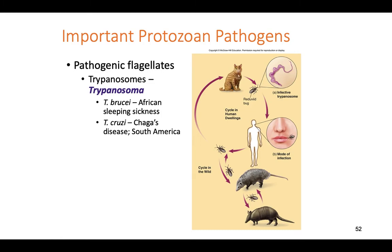One important one you might be familiar with is Trypanosoma — a flagellated protozoan capable of swimming. Trypanosoma brucei is spread by the bite of an African tsetse fly: the fly takes a blood meal, picks up the protozoan from the human's blood, flies away, bites another human, and introduces the protozoans through the bite. A couple of weeks later, that person falls into a coma and dies — this is African sleeping sickness. Trypanosoma cruzi, found in South and Central America, causes Chagas disease.